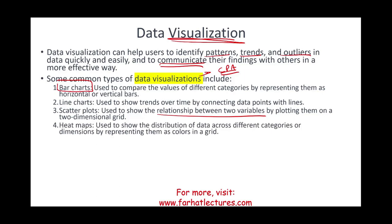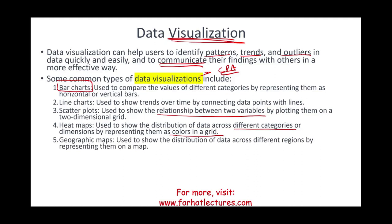Heat maps are used to show the distribution of data across different categories or dimensions, representing them as colors in a grid. For example, red could indicate less sales and green more sales. Geographical maps can show distribution or sales across the globe, using different colors or shading on the map to indicate volume.